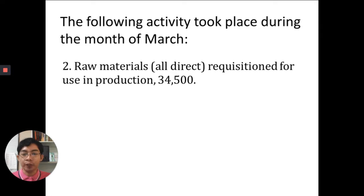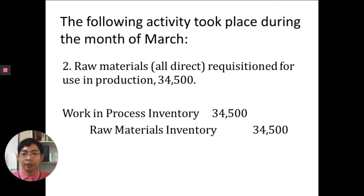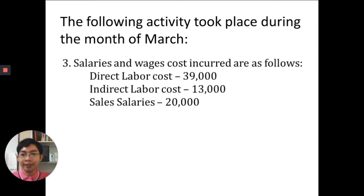Number two: raw materials, all direct, requisitioned for use in production — $34,500. The entry would be debit work in process inventory, credit raw materials inventory for $34,500. Because all the raw materials are direct, we use work in process inventory. Requisition means we are transferring materials from the warehouse into production to make our product.